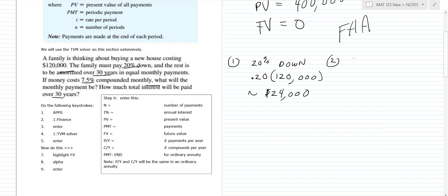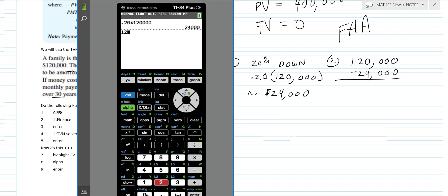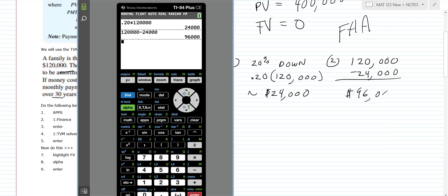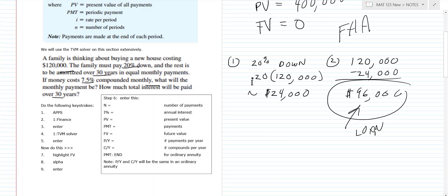The second thing we do is take the $120,000 and subtract the $24,000 down payment, which gives us the amount we're actually financing. That comes out to $96,000 — that's your loan amount, and that's what we'll be working with in the TVM solver.